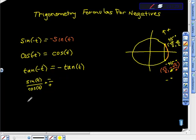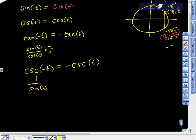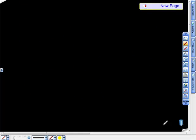Moving on, we would go to cosecant. Cosecant of negative t is equal to what? Well, cosecant is one over sine t, and we know sine t is opposite, so it is the opposite of cosecant of t.